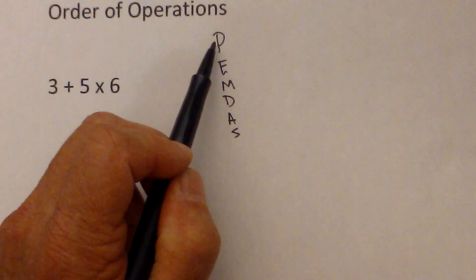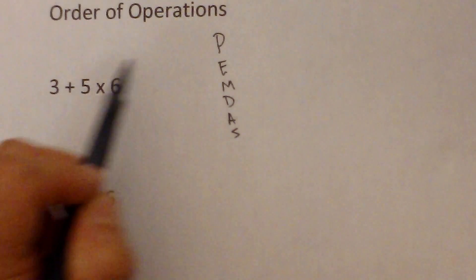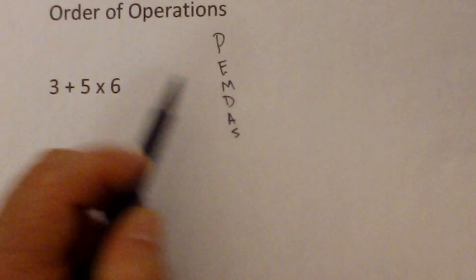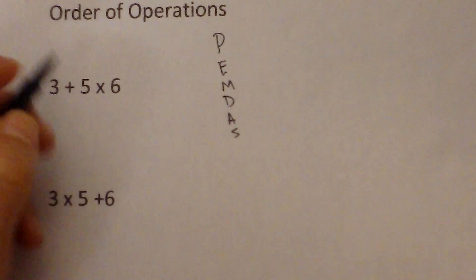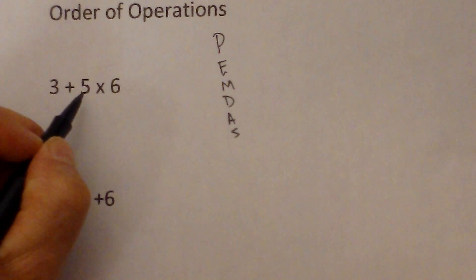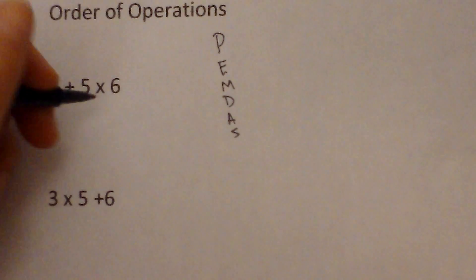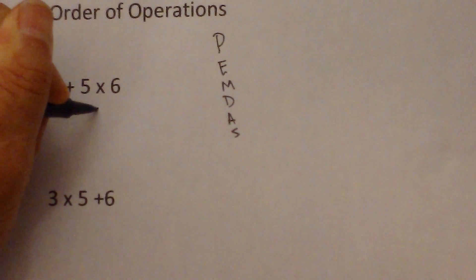So, are there parentheses? No. Exponents? No. Multiplication? Yes. So I'm going to start here. And you always work multiplication left to right. So I've got 5 times 6 which is 30.